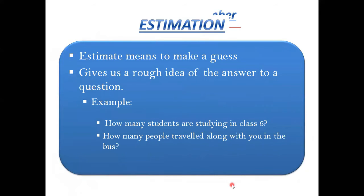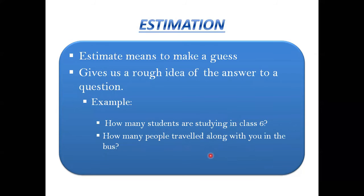The next topic is estimation. Estimation means making a rough guess — it gives us a rough idea of the answer, not an exact answer. For example, you might estimate there are 150 or 200 students in school, or about 50 or 60 people on a bus, without knowing the exact count. We can estimate sum, difference, product, and quotient.